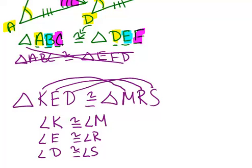You also know something about the side lengths that are congruent. Side KE has to be congruent to side MR because those are the same letters in the same order for each part of the expression.